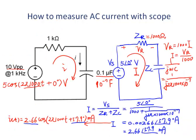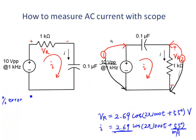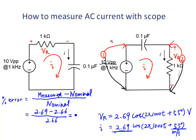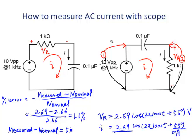Let's compare with the theoretical values. The nominal amplitude should be 2.66 mA and the phase angle is 57.9 degrees. We calculate the error for magnitude and phase angle separately. For amplitude, the error is (measured − nominal) / nominal = (2.69 − 2.66) / 2.66, giving an error percentage of 1.1%. For the phase angle, the error is measured minus nominal: 55 − 57.9 degrees, so it is off by 2.9 degrees.